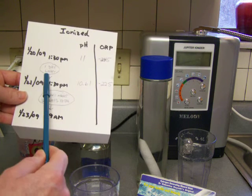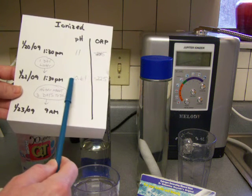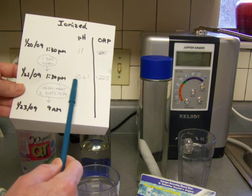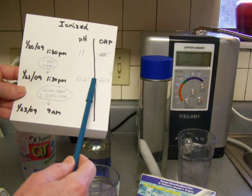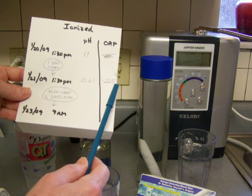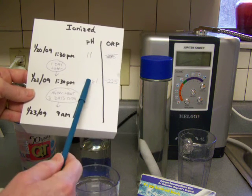And now, two days ago, which was one day later after I had poured it, it dropped in pH to a 10.61 and the ORP went to a negative 225. So there was a little bit of a raise of ORP and drop of pH.